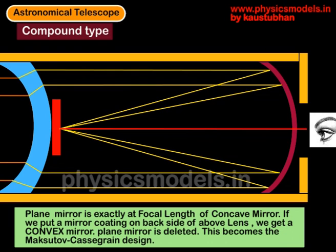In some cases, the plane mirror could be deleted and the back side of the concavo-convex lens could be painted or given a silver coating, in which case it would act as a mirror. This kind of design is called the Maksutov-Cassegrain design. The ray diagram won't change for that. I hope this was useful — thanks and have a great day.